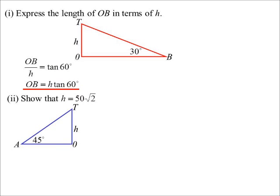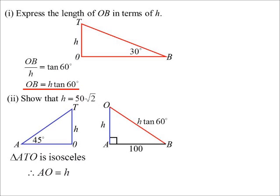Show that H turns out to be 50 root 2. I'm going to draw the other triangle in now. It was a 45 degree right-angled triangle. That makes it isosceles. So AO we know is also H. I'm now going to draw another triangle, and this one's the base of the picture. So we just worked out OA is H. In part I, I said OB was H tan 60. And we know AB is 100, because we walked 100 meters along.